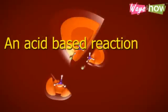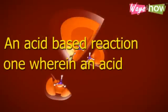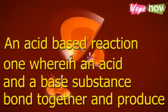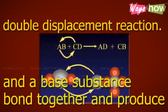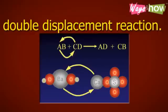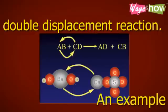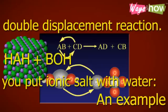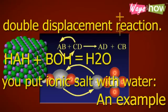An acid-base reaction is one wherein an acid and base substance bond together and produce a kind of double-displacement reaction. An example would be when you put ionic salt with water: HA plus BOH equals H2O plus BA.